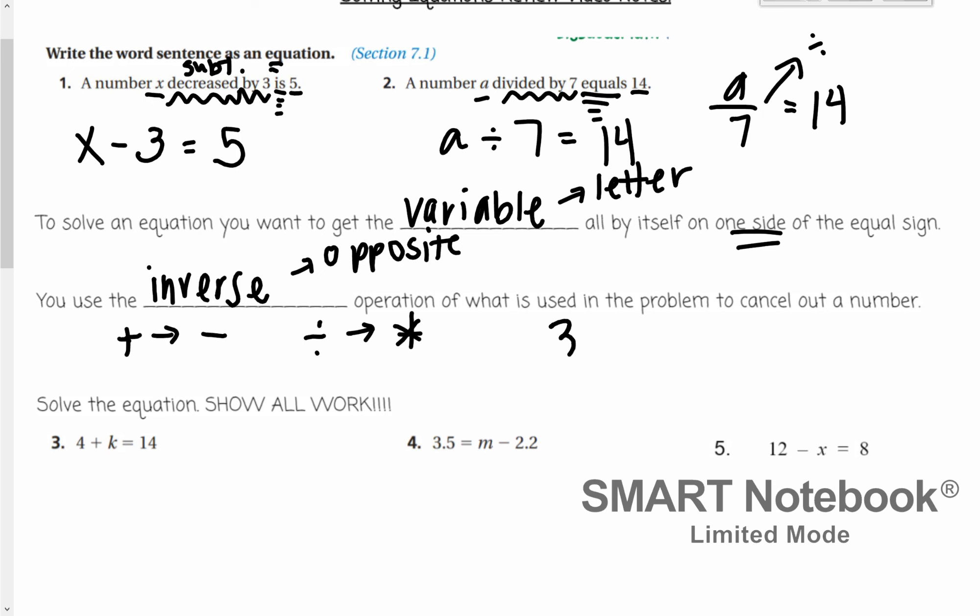Remember, when we have a number next to a letter, what that means is 3 times a. It's just understood that that's multiplication. We don't have to write that sign. So in order to solve this, we would do divide by 3. Those are just a couple little hints that we're going to remember as we're solving these equations.